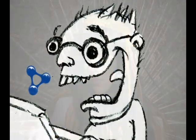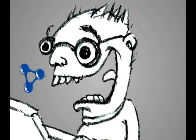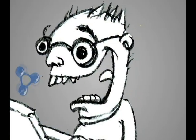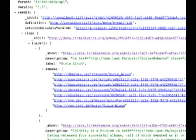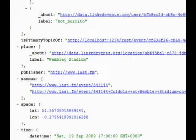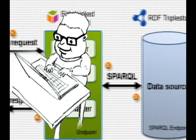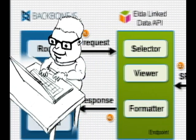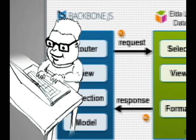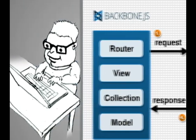But you don't need to be a semantic web guru to access the data. There is also a linked data REST API based on a simpler JSON format. Bob, Alice's brother, is a web developer. He can create a mashup using technologies he is already familiar with.